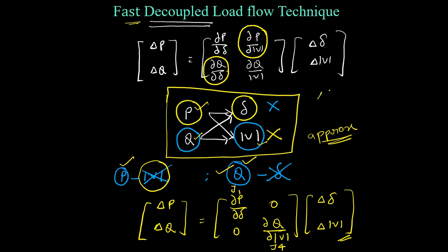That is why the NR method is a bit more complicated but accurate, because we are not taking any approximations there. But in the Fast Decoupled method, as compared to NR, the converging process will be very fast, the computation time will reduce, and memory will also reduce. However, the Fast Decoupled method is less accurate compared to NR. To improve accuracy, we have to increase the number of iterations.